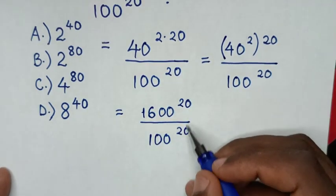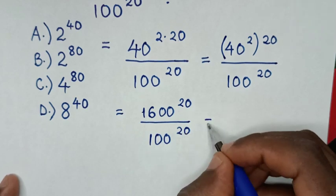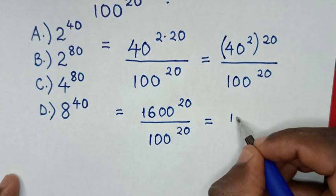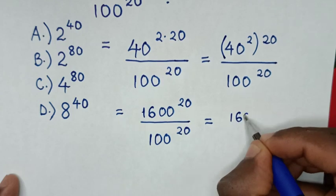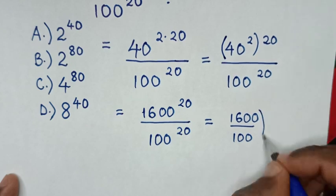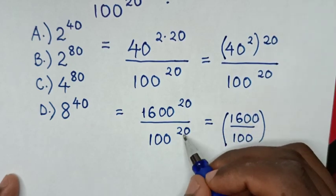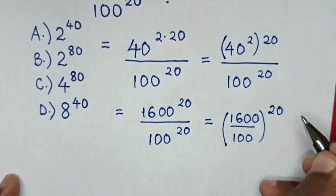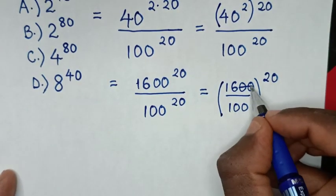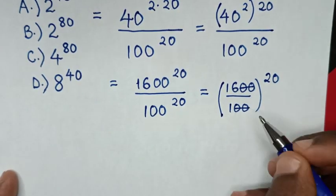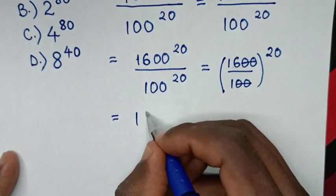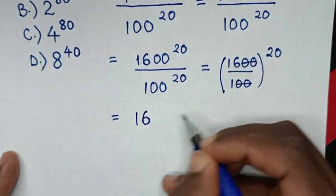Then, because the power of 20 is common, it will be equal to 1600 over 100, in brackets, to the common power of 20. This simplifies to 16 power of 20.